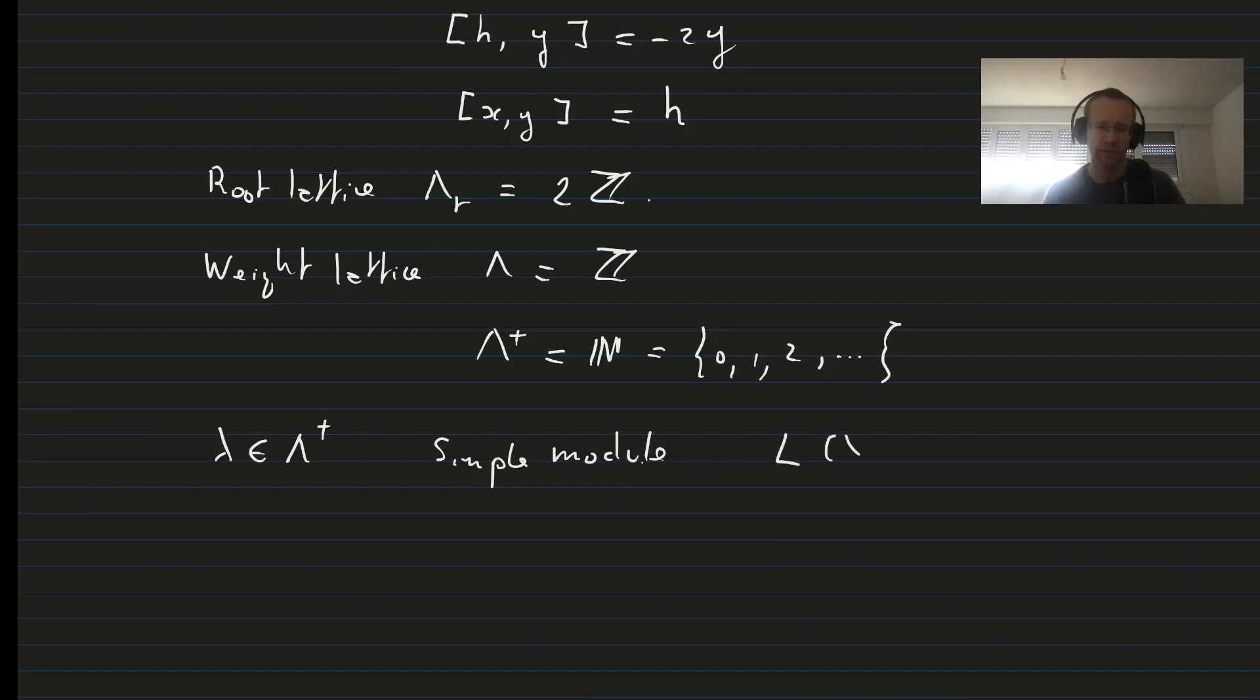Which we'll call L of lambda. And it has weights lambda as the highest weight, then lambda minus 2 when we lower, lambda minus 4, etc., all the way up to minus lambda minus 2, and then minus lambda finally.